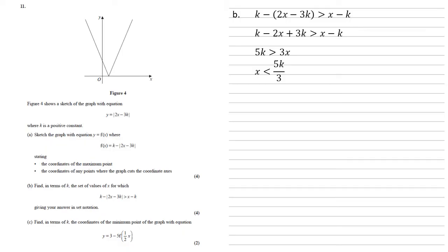The other answer comes when the 2x minus 3k is negative, and the modulus part of that makes it positive. So we're going to do k minus the negative of the bracket 2x minus 3k, and this is going to be larger than x minus k. Expanding this, we get k plus 2x minus 3k is larger than x minus k. If we subtract x from both sides, and we add 3k and subtract the k from the left, we get that x is larger than k.